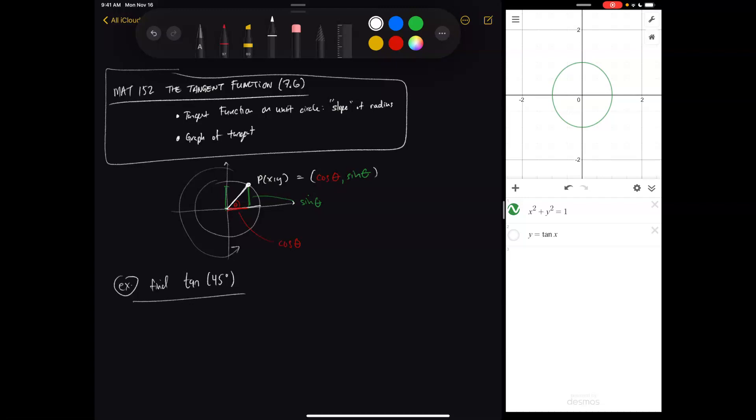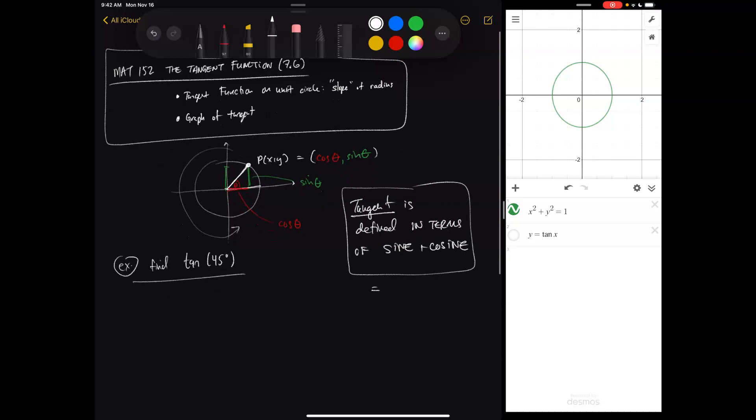So how we define tangent is in terms of sine and cosine. This is really important, especially when you get to calculus, to remember to break things down into sine and cosine. It's defined as sine of theta over cos of theta. So for any angle theta, tangent equals sine over cosine, the sine of the angle over the cosine of the angle.